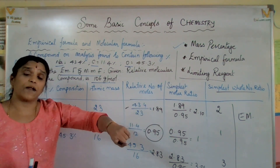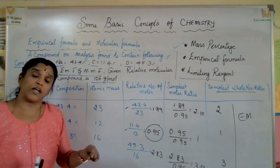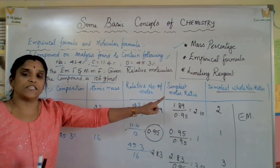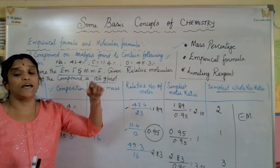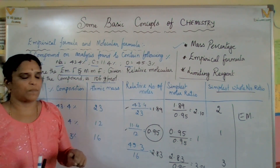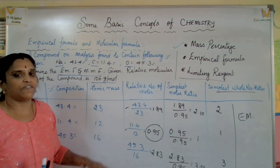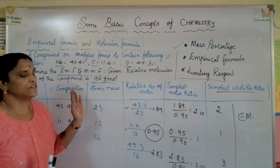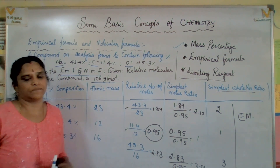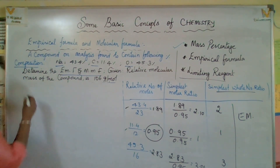If N = 1, the empirical and molecular formulas are identical. If N = 2 or 3, the molecular formula would be double or triple the empirical formula. This is a 3-mark question and easy to solve if you go step-wise.